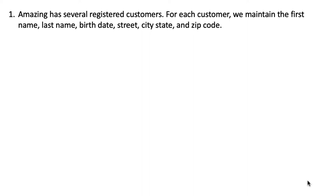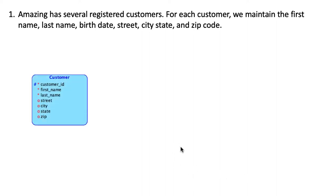The first business rule or business situation we have is that this company called Amazing has several registered customers. For each customer we maintain the first name, last name, birth date, street, city, state, and zip code. This is fairly straightforward and we can go ahead and create this entity type.